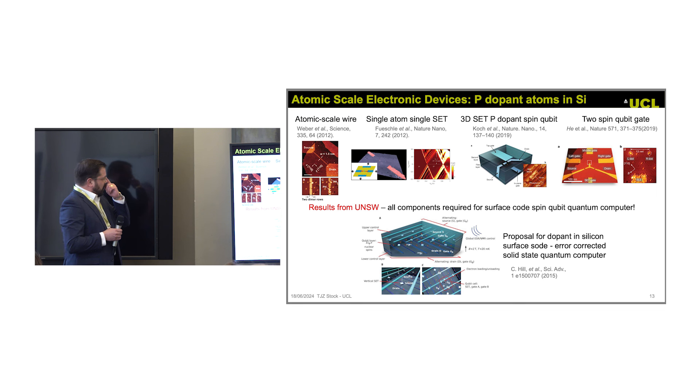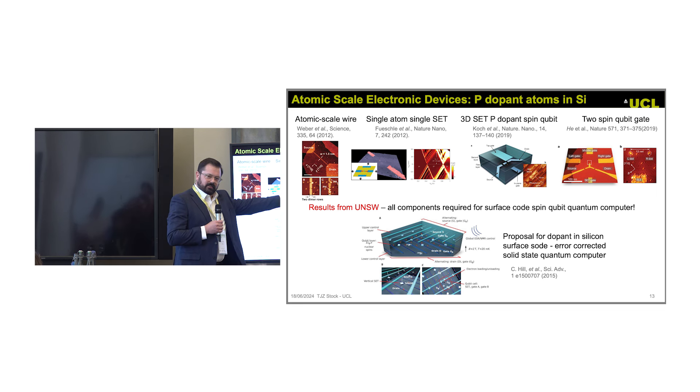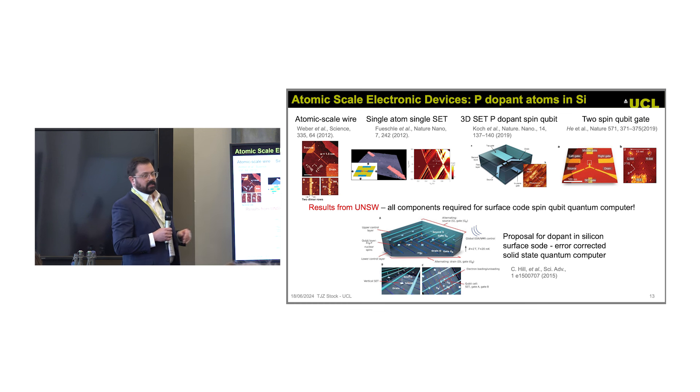We're following the work of University of New South Wales where they developed this. They've not only done a single electron transistor, they've done it with a single atom in the center. They make a single atom wide wire, they make a two plane device, and they make a two-qubit quantum gate using silicon. This is all the ingredients you need to make this surface code error-corrected solid-state quantum computer.